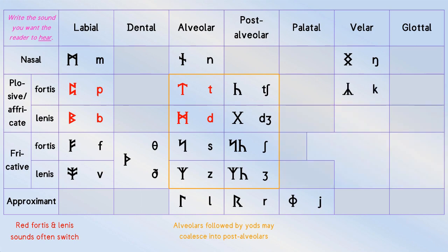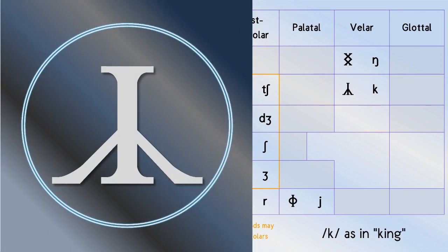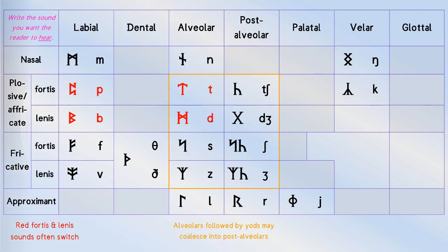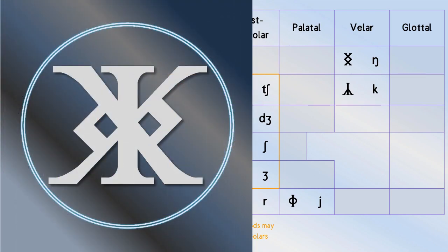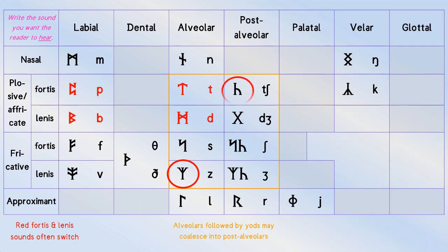Next we have calc, which makes the k sound. It has a unique double form shown on screen now. How calc took its form historically is a matter of some speculation. It may have been elks inverted, or a mirrored bind rune of chen. Regardless, because chen was the original character to make the k sound in English, we want to honour that heritage by at least partially retaining it.